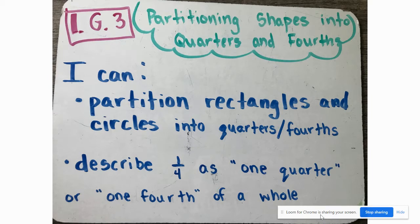Our I can statements say I can partition rectangles or squares, remember squares are rectangles, and circles into quarters and fourths, and I can describe one-fourth as one-quarter or one-fourth of a whole.